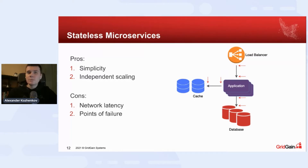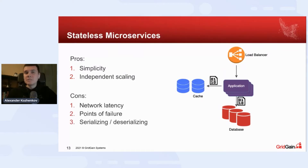All of these network calls are potential points of failure. Even if we assume that our database and cache always respond correctly and never crash, we can still get an error because of network communication back and forth. Also, data serialization and deserialization is a problem, because the application serializes data before sending a request to the cache, then the cache deserializes it and serializes the response again, and the same for the database. This process may take a majority of CPU time for simple services.